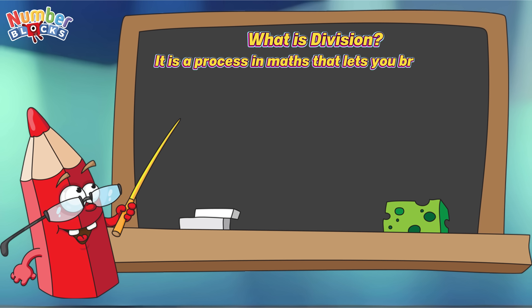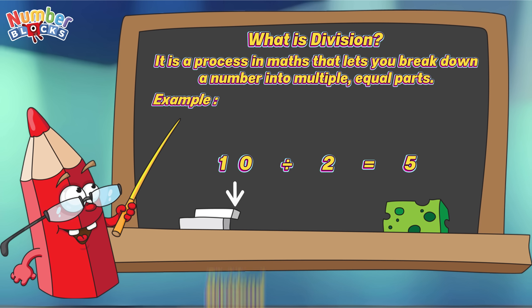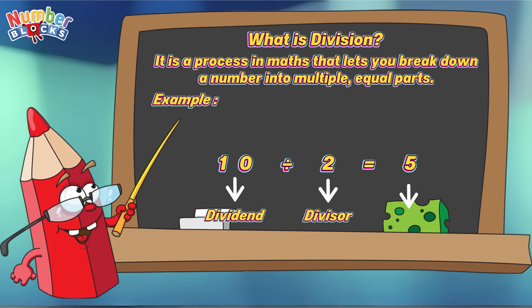Let's define first what is division. It is a process in math that lets y'all break down a number into multiple equal parts. Here is an example: 10 divided by 2 is equals 5. Wherein 10 is the dividend, 2 is the divisor, and 5 is the quotient.